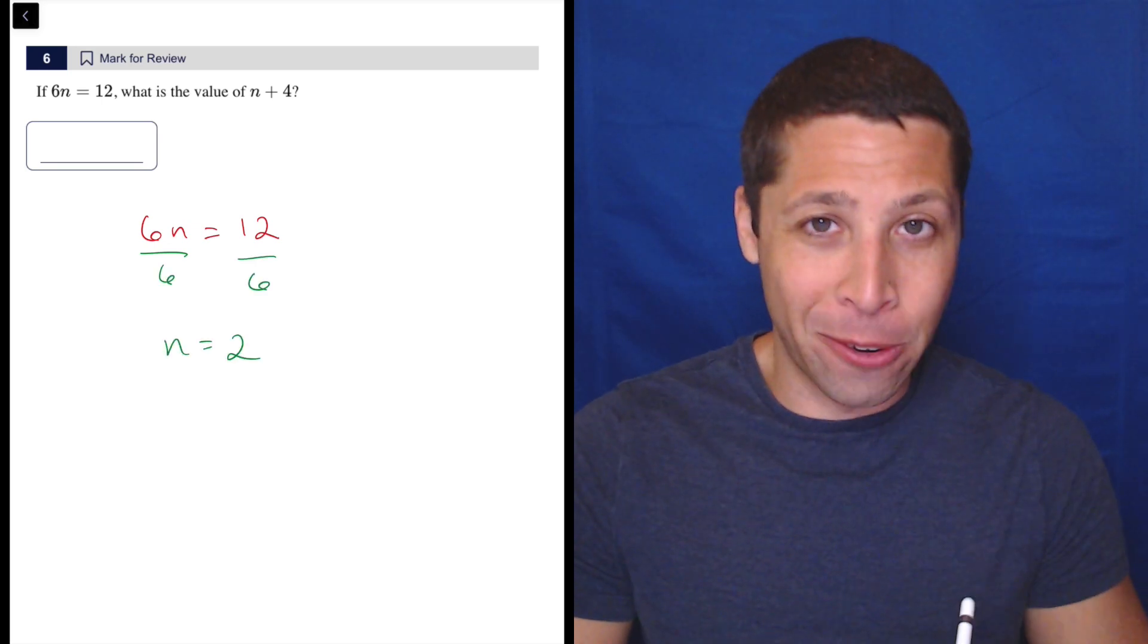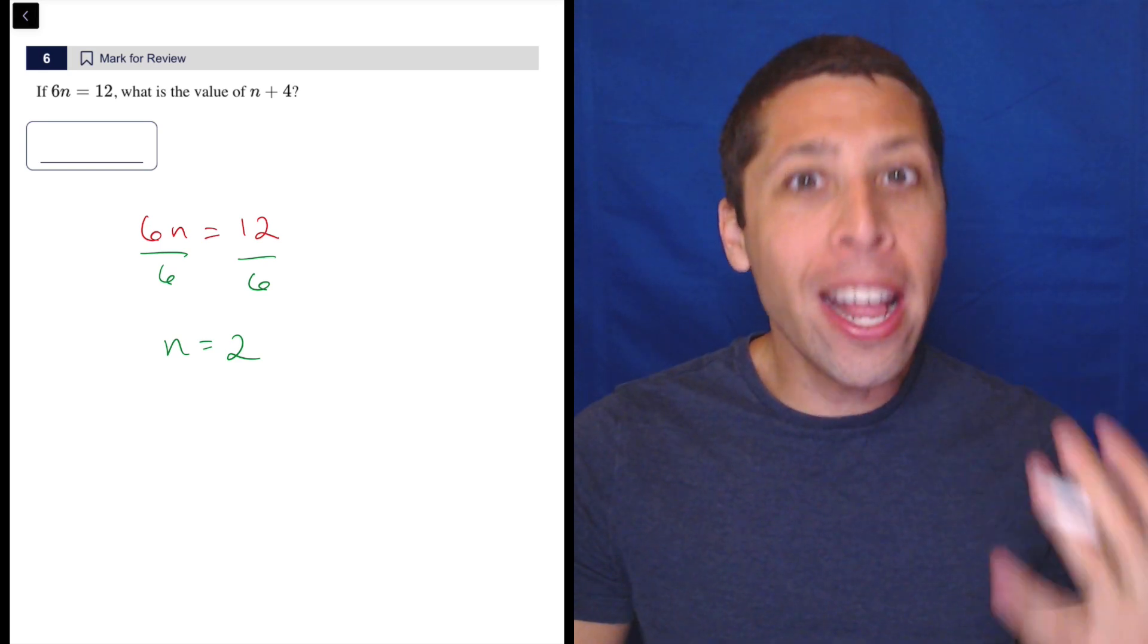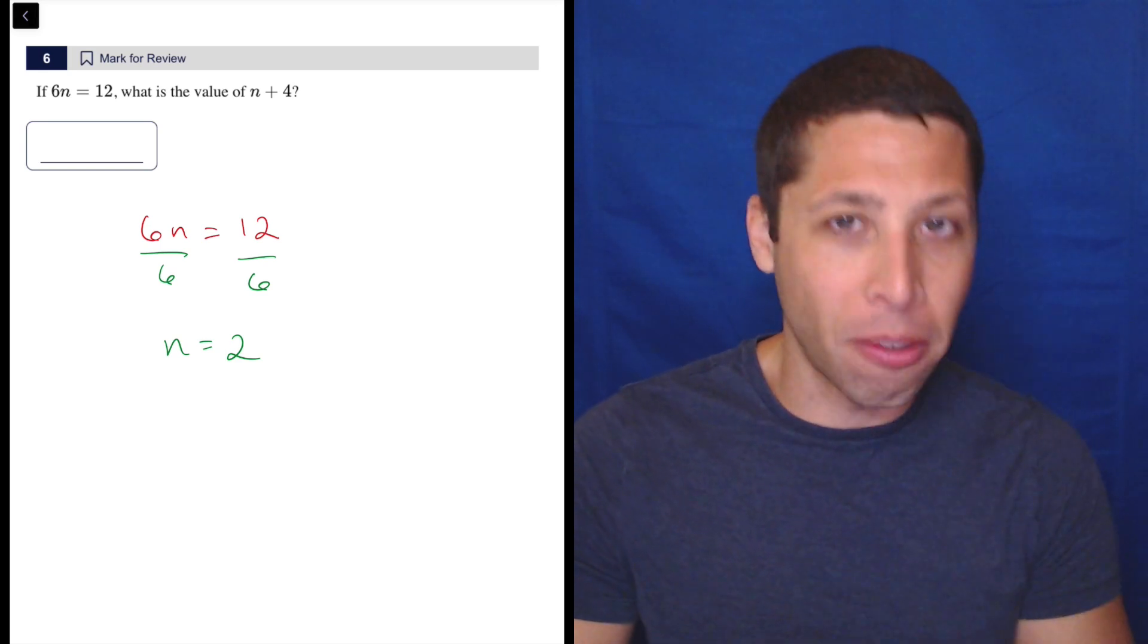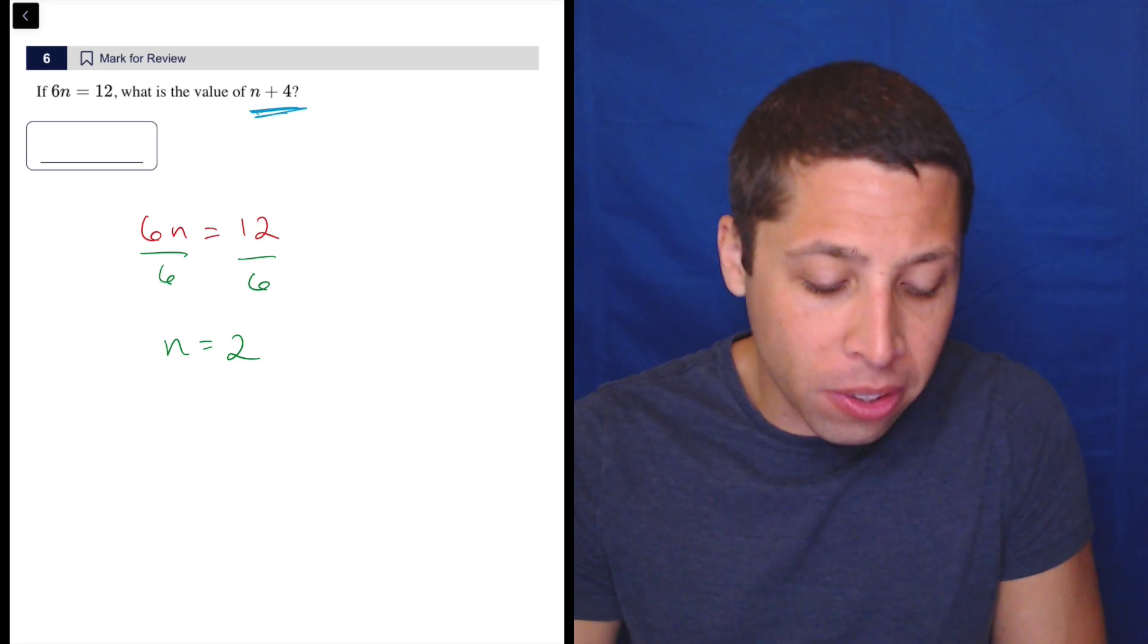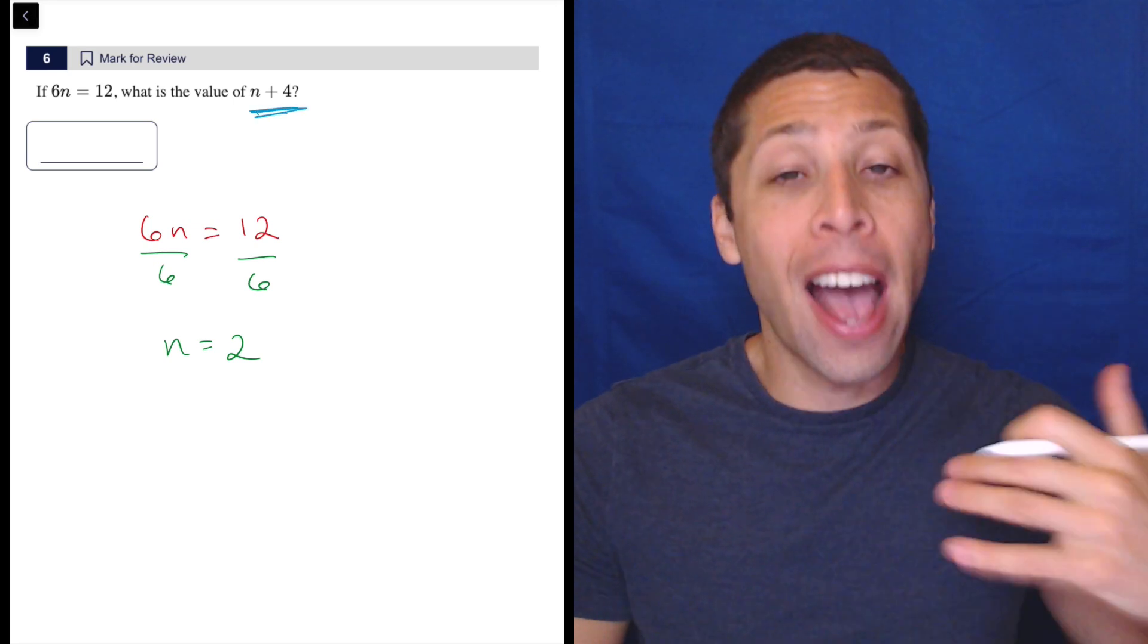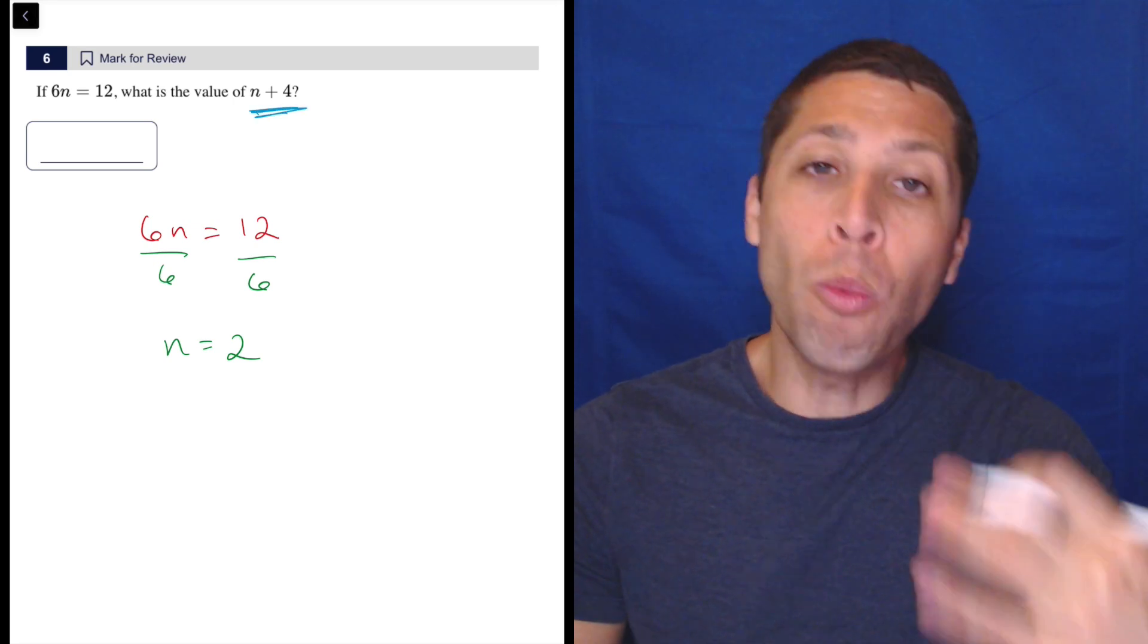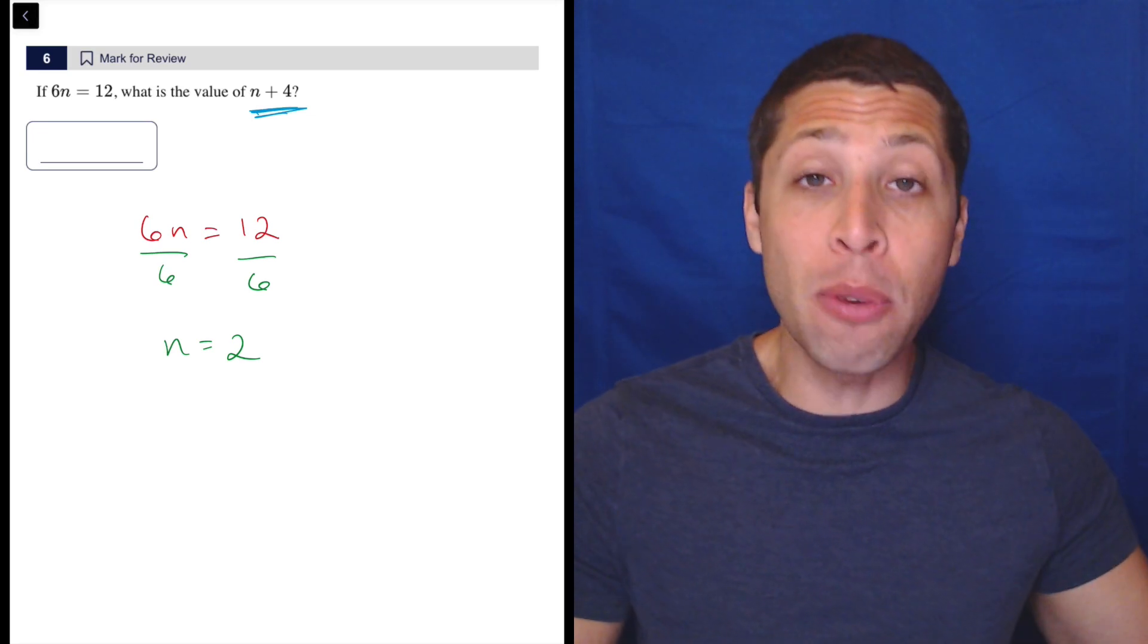But do not put that in. Not just for this question. For any question that involves solving for x, solving for n, you always need to go back because they are purposely going to, in many cases, ask for something different from what you expect. This is a very classic SAT move.